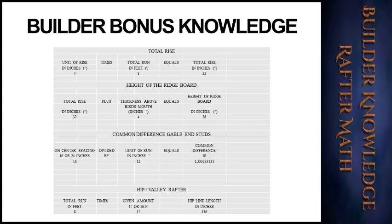The total rise is the unit of rise in inches times the total run in feet. The height of the ridge board is found by adding the height above plate on your rafters to the total rise. For the common difference of gable end studs, take your spacing of 16 or 24 inches and divide by the unit of run — always 12. For hip and valley rafters, take your run in feet times 16.97 or 17.